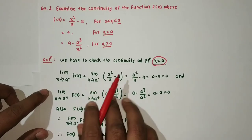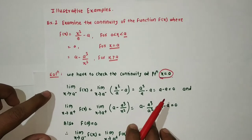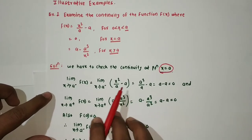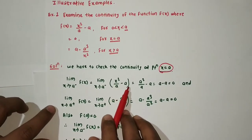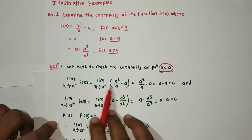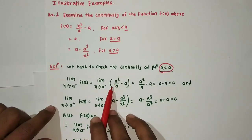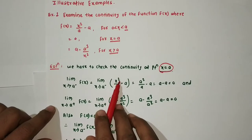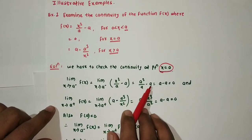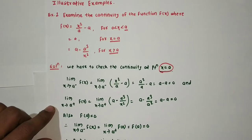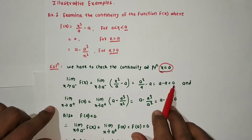So limit as x tends to a minus of f(x) equals limit as x tends to a minus of x²/(a - a). We directly put x = a, giving a²/(a - a). Now a² upon a is a, and a minus a is 0 — wait, let's reconsider: a²/a = a, and a - a = 0.